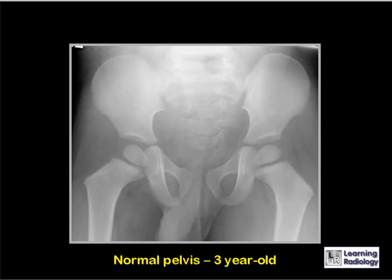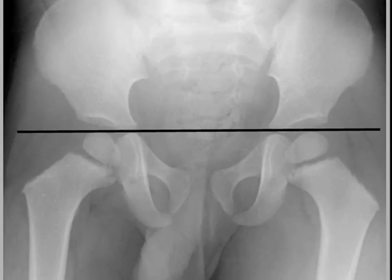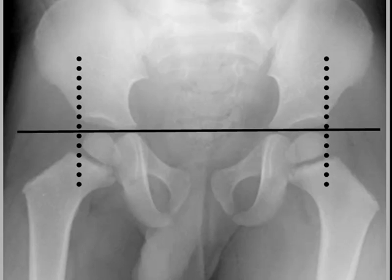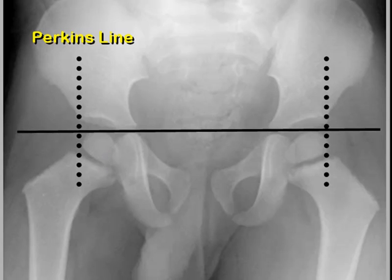This is a normal pelvis in a three-year-old. First, there is a horizontal line drawn using the inferior borders of the triradiate cartilage, called the Hilgenreiner line or Y line. Then two lines perpendicular to the horizontal line at the outer edge of the acetabulae can be drawn — this is called Perkins line — forming two sets of grids with four quadrants each. Normally, the femoral head lies in the lower inner quadrant of each grid.